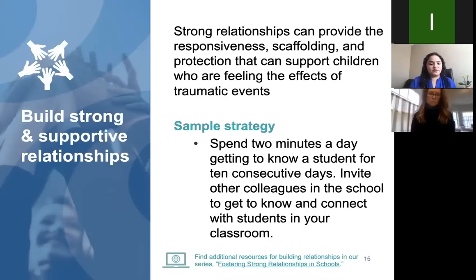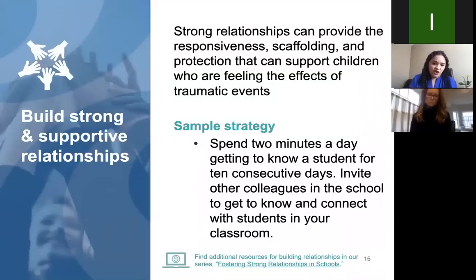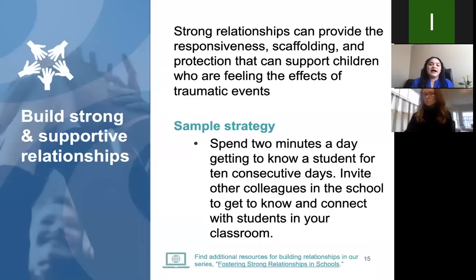We also talk about building strong and supportive relationships. Strong relationships can provide the responsiveness, scaffolding, and protection that supports children who are feeling the effects of traumatic events. An example strategy is spending two minutes a day getting to know a student for 10 consecutive days — known as the two-by-ten strategy — to connect with students about something other than their learning. Even now at home, a quick check-in asking about their day or who they got to talk to lets students know you're paying attention to them and thinking about them.